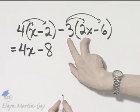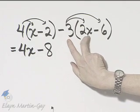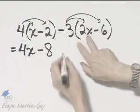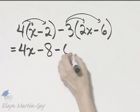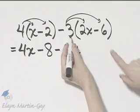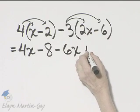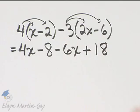Now be very careful. If you'd like, you can think of it as negative 3 times 2x. That would be negative 6x. I'll write minus 6x. And then negative 3 times negative 6, that's positive 18. I'll write plus 18.